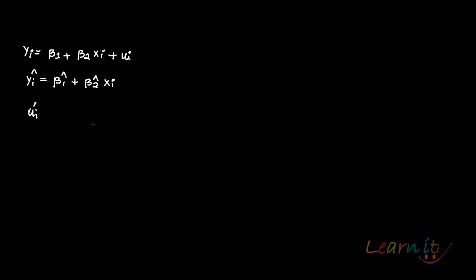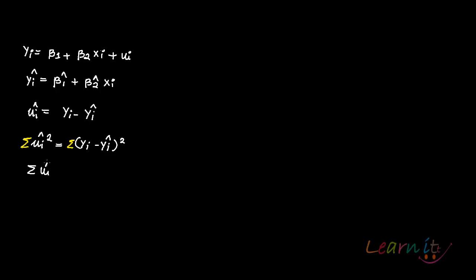An estimate of the residual would be ui-hat equals yi minus yi-hat. In OLS — ordinary least squares — we square these residuals: (yi minus yi-hat) squared, and then sum them. You can write: summation of ui-hat squared equals summation of (yi minus beta1-hat minus beta2-hat·xi) squared.